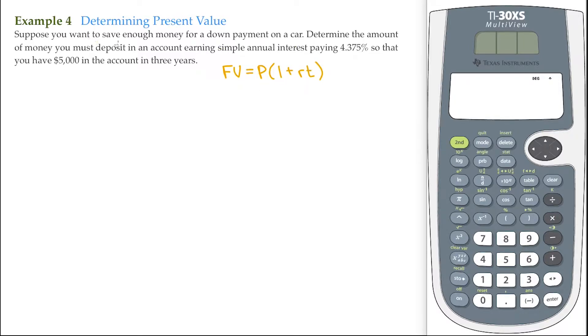So this says, suppose you want to save enough money for a down payment on a car. Determine the amount of money you must deposit, that's what you have to start off with, in an account earning simple annual interest paying 4.375%. So I've got an interest rate here of 0.04375, that's our 4.375%, so that you have $5,000. That's our future amount.